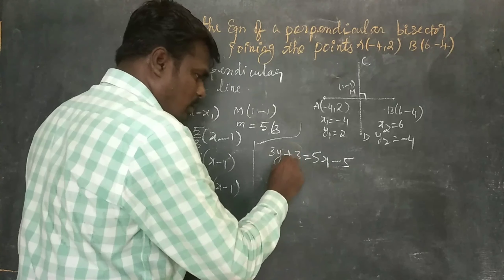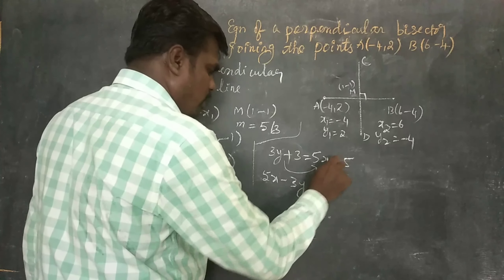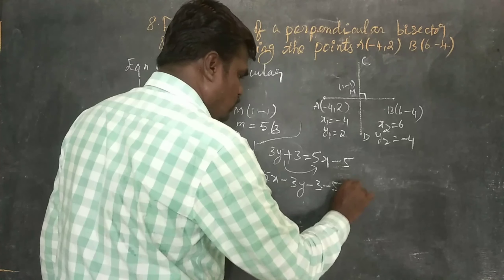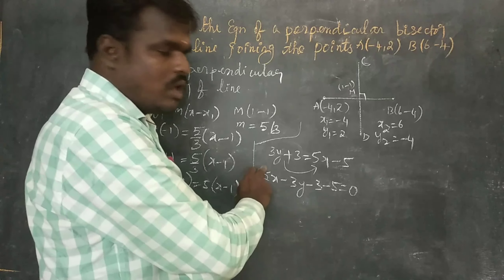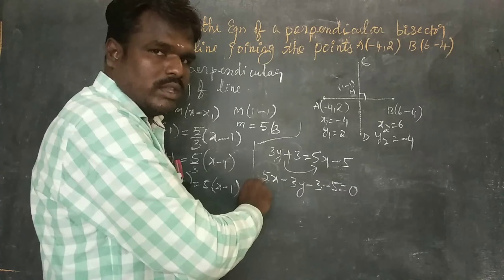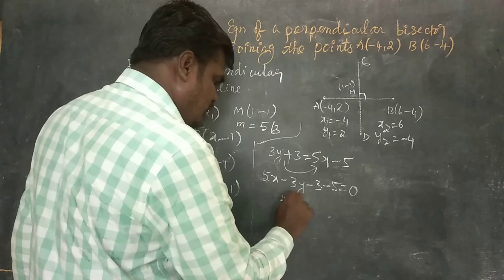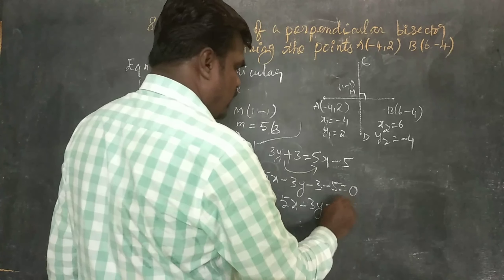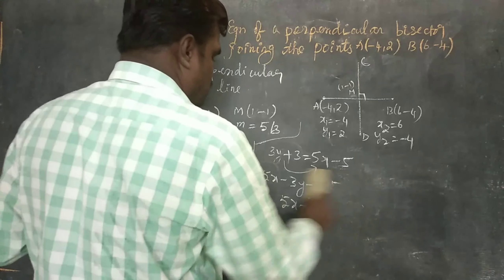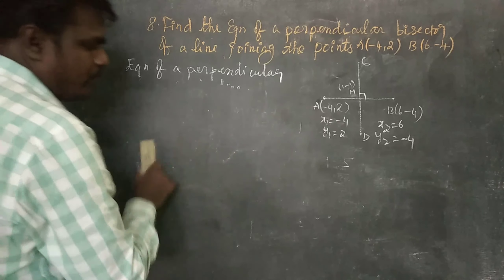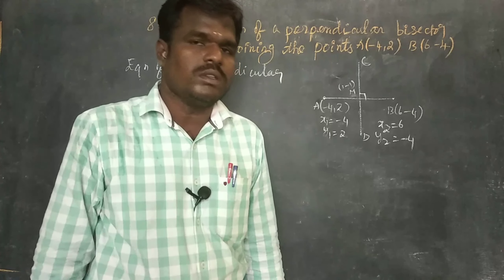Rearranging all terms to one side: 5x - 3y - 5 - 3 = 0, so the required equation is 5x - 3y - 8 = 0.